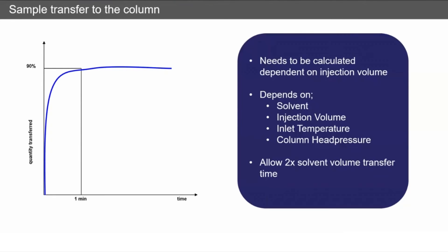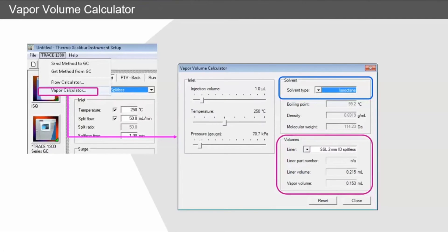It sounds like a lot to think about, but practically every software has a vapor volume calculator. In this, we'll select what solvent we're using, the liner size, the temperature, the injection volume, and the pressure on the head of the column. For example, in this case we can see that the vapor volume of a 1 microliter injection is 0.15 mL.